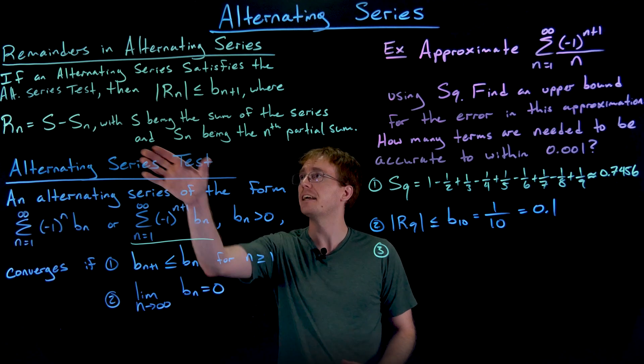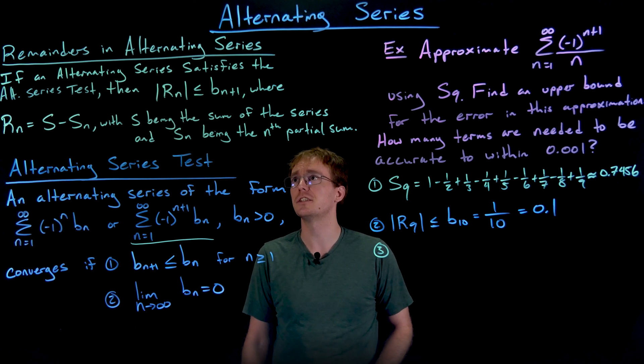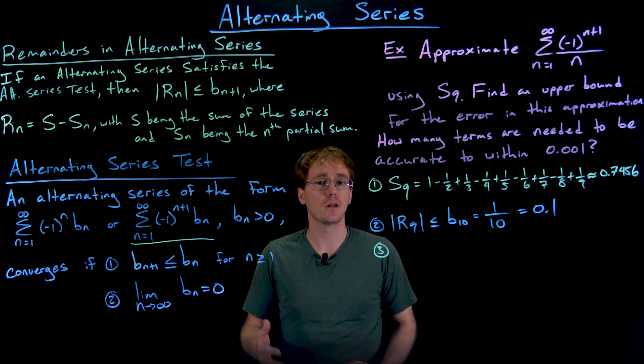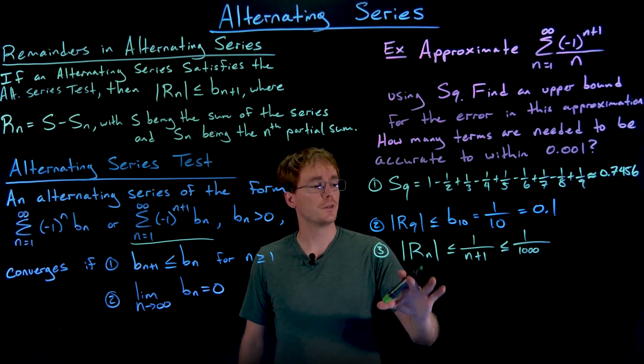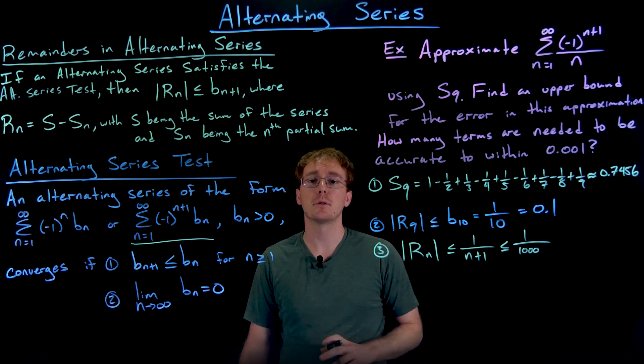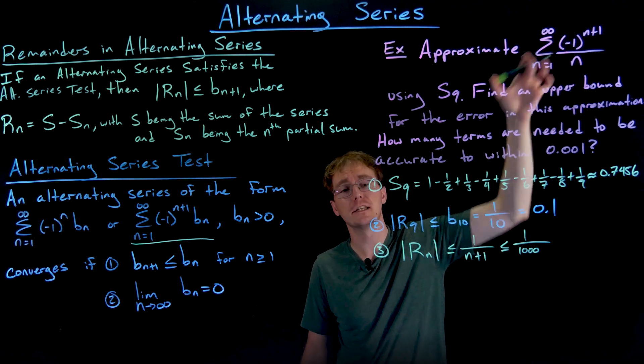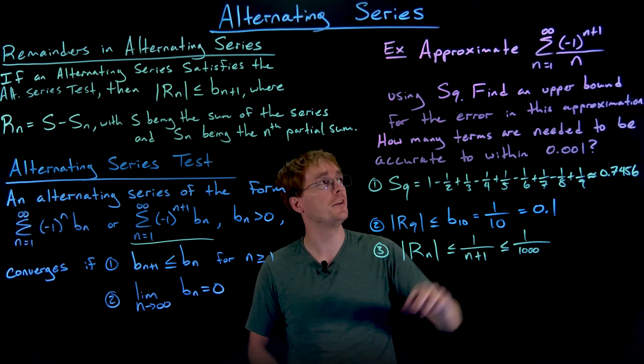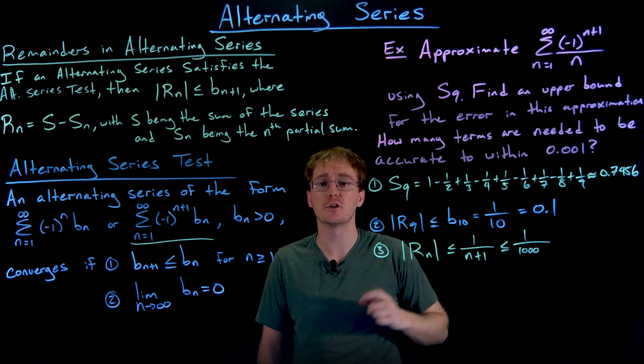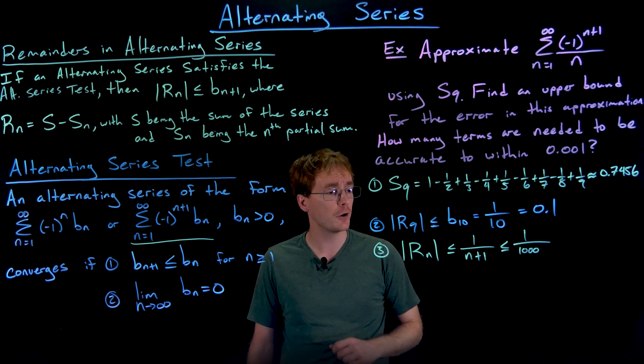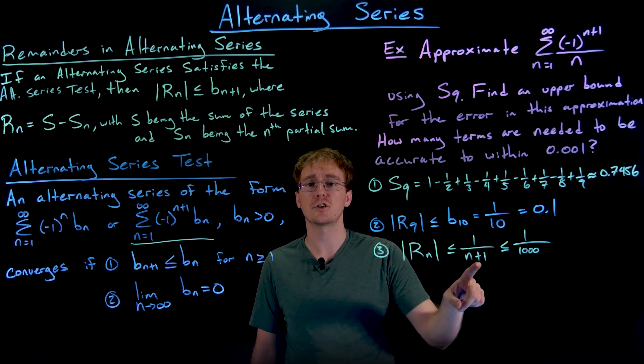For that, we are again using our result for remainders and alternating series. We know that our error is always going to be less than the n plus first term. And here our n plus first term, ignoring the alternating part, is going to look like one over n plus one. Just take the formula for the terms in our series here and replace each n with n plus one to find that out. So this is what our n plus first term looks like.